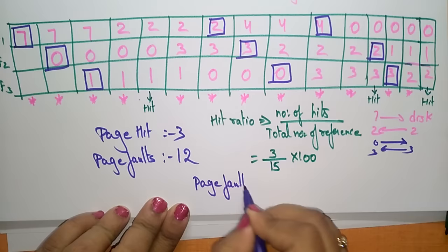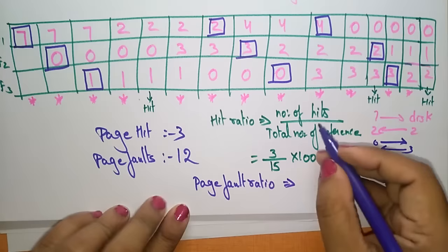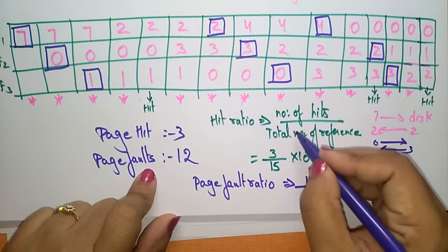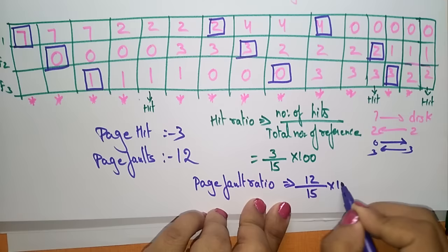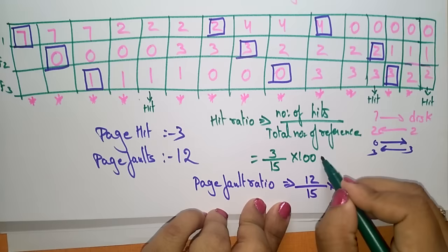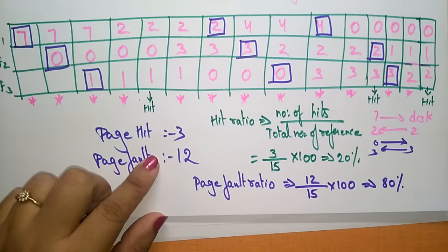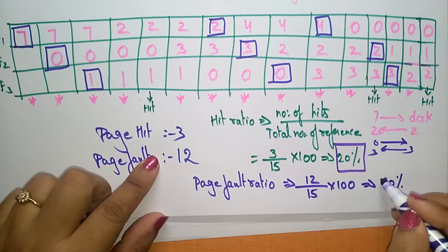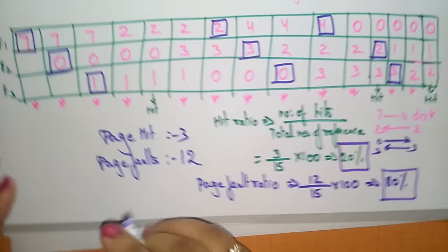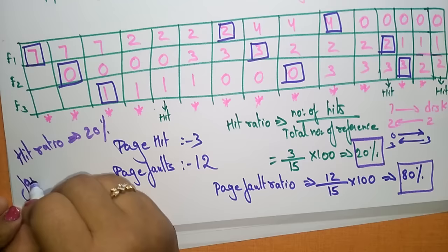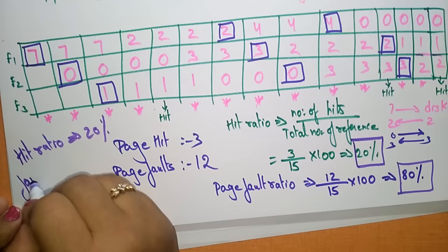The page fault ratio is: number of page faults divided by total number of references, multiplied by 100. That is 12/15 × 100, which gives approximately 80 percent. So the FIFO algorithm has a hit ratio of 20 percent and a fault ratio of 80 percent — this is poor performance. This is how the FIFO page replacement algorithm works.